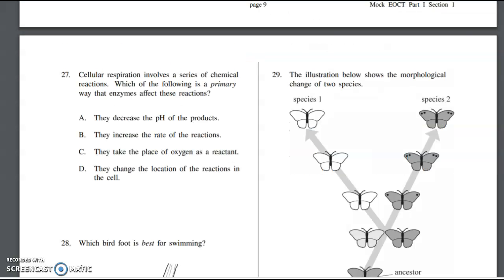Number 27 says cellular respiration involves a series of chemical reactions. Which of the following is the primary way that enzymes affect these reactions? Enzymes speed up chemical reactions by lowering the activation energy. It doesn't really matter that we're talking about cellular respiration - they just want to know what the enzyme does. B says increase the rate of reaction, so B sounds like an enzyme. It increases the rate of reaction. That's the job of an enzyme, so B is the correct answer.